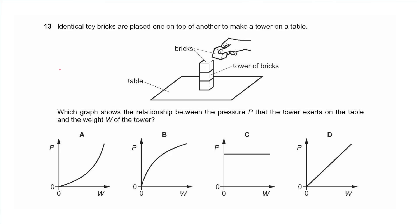Question 13 says identical toy bricks are placed one on top of another to make a tower on a table. Which graph shows the relationship between the pressure the tower exerts on the table and the weight of the tower? Pressure is proportional to the force, which is the weight, so we get a straight line passing through the origin — that would be D.